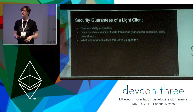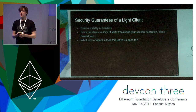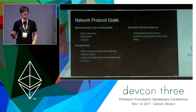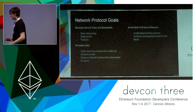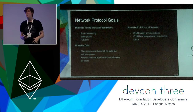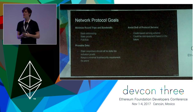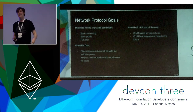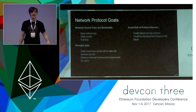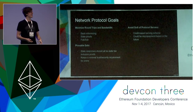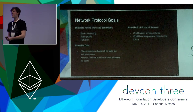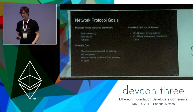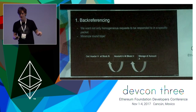Those kinds of attacks are really just about tricking a user into taking different actions based on showing them a wrong state — they can't actually steal money without the user acting themselves. Our network protocol goals are: minimize round trips and bandwidth, since on a mobile device or low-bandwidth connection you need to reduce latency; ensure provable data so you don't rely on more trust than miners correctly updating state transitions; and prevent full nodes serving light nodes from getting DOSed by metering requests sensibly.